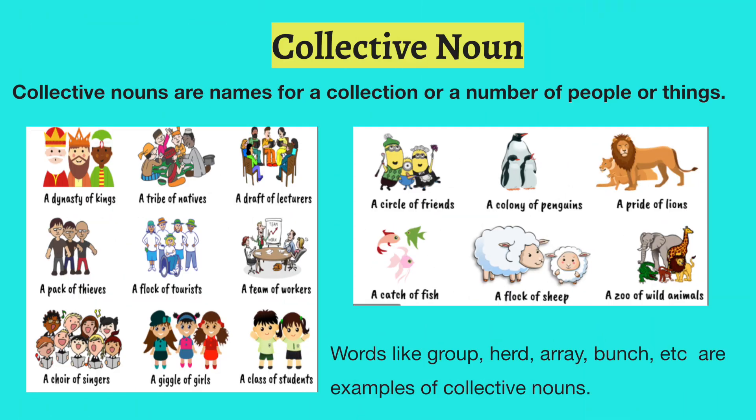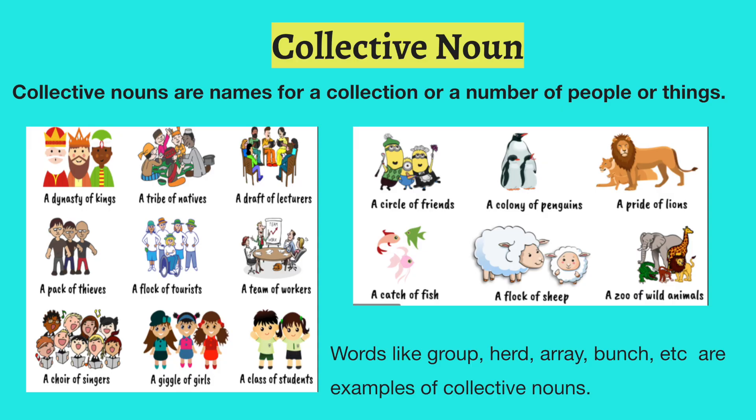Collective nouns are names given for a collection or a number of people or things. If you want to name a group of things that share the same category or specific characteristic, we use a collective noun. Examples on screen include: a dynasty of kings, a tribe of natives, a draft of lecturers, a pack of thieves, and so on. Words like group, herd, array, bunch, and much more are all examples of collective nouns. Collective nouns are not written in capital letters when they appear in the middle of a sentence.